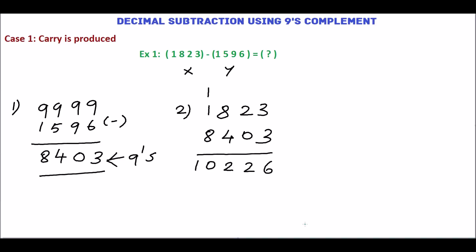In step 2, carry is produced. This carry is called the end-around carry. Add this carry with the LSB of the sum. 6 plus 1 equals 7. So 0.227 base 10 is the final answer.